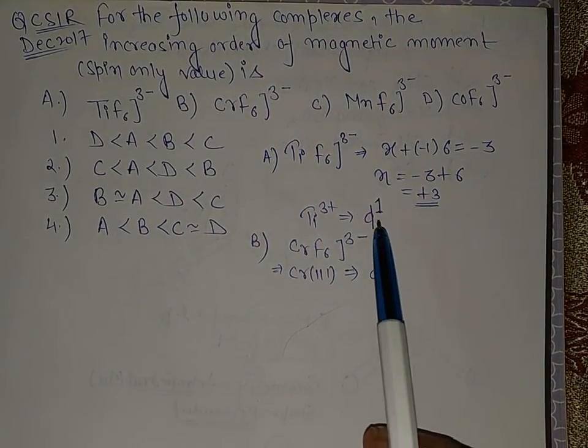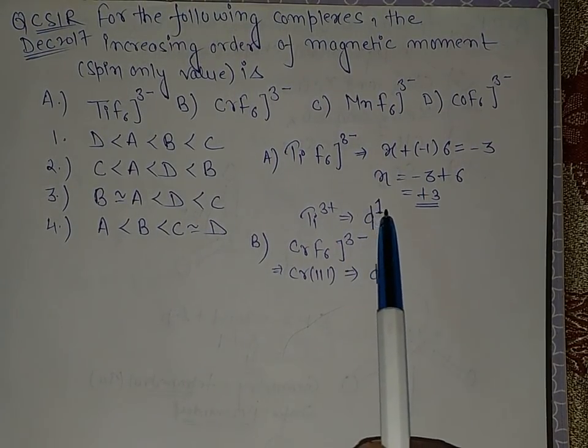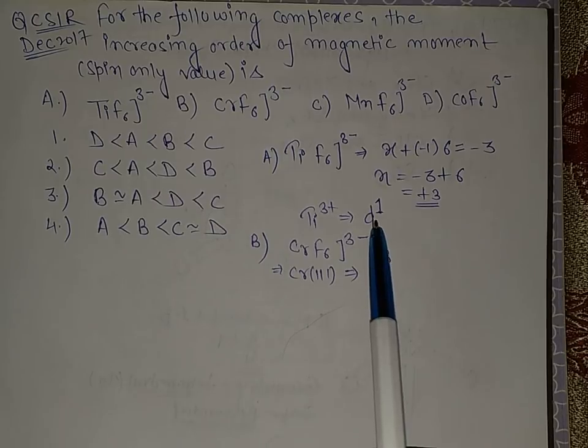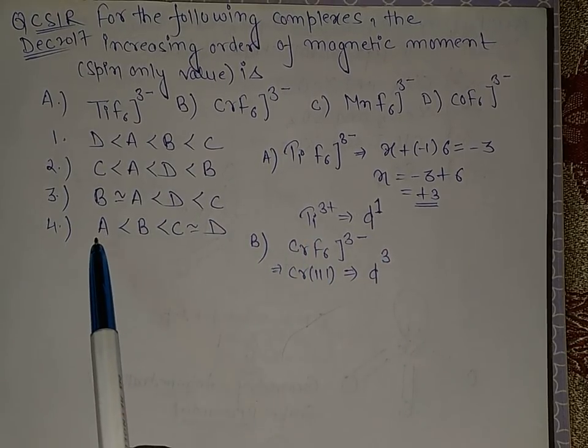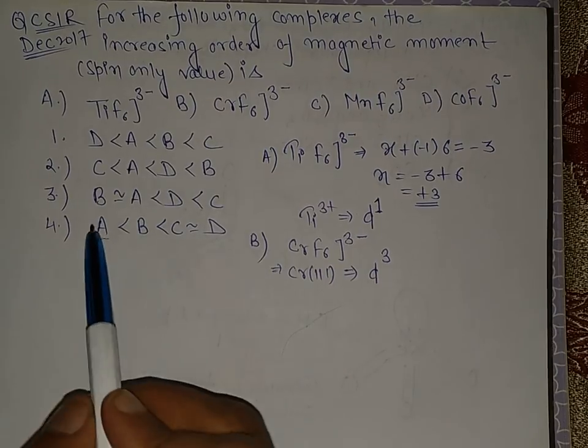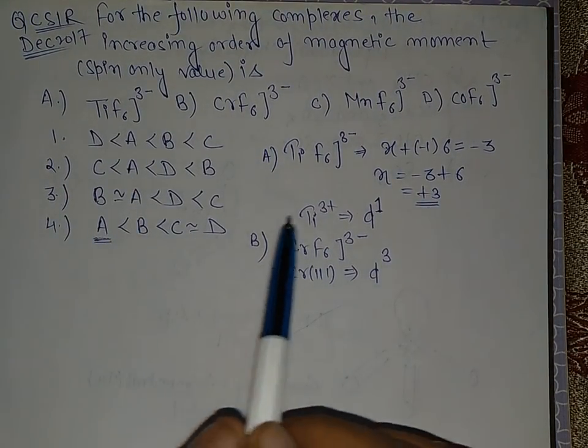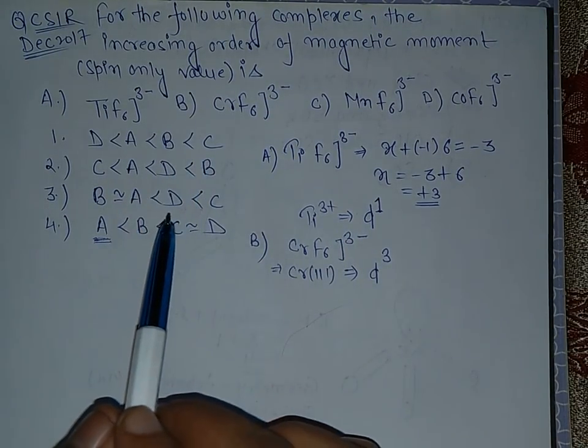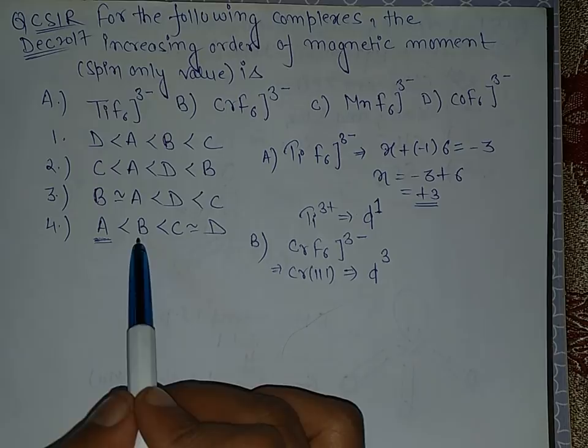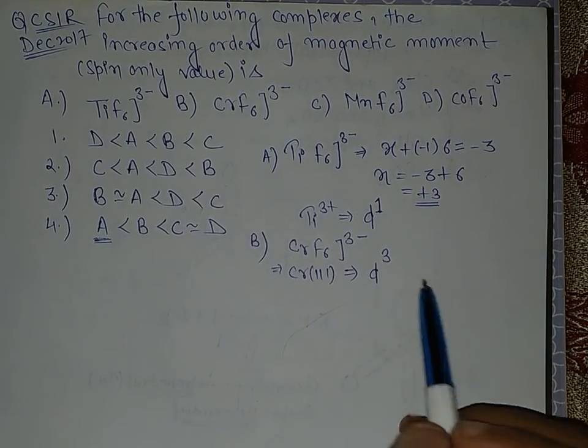Now looking at the question, this has D1 electron, only one electron, so the magnetic moment will be least for this, option A. So A is the least in option 4. By now we can say that 4 is the right option, but still let's check the second.